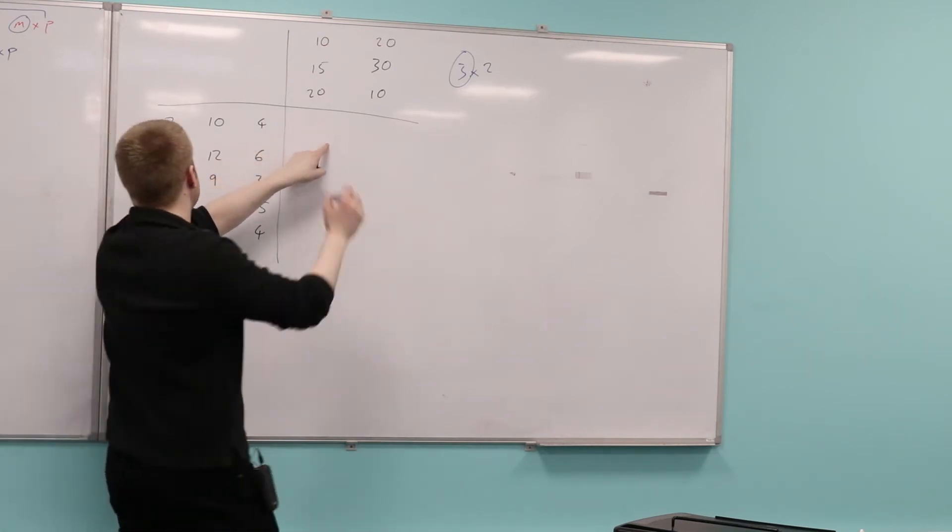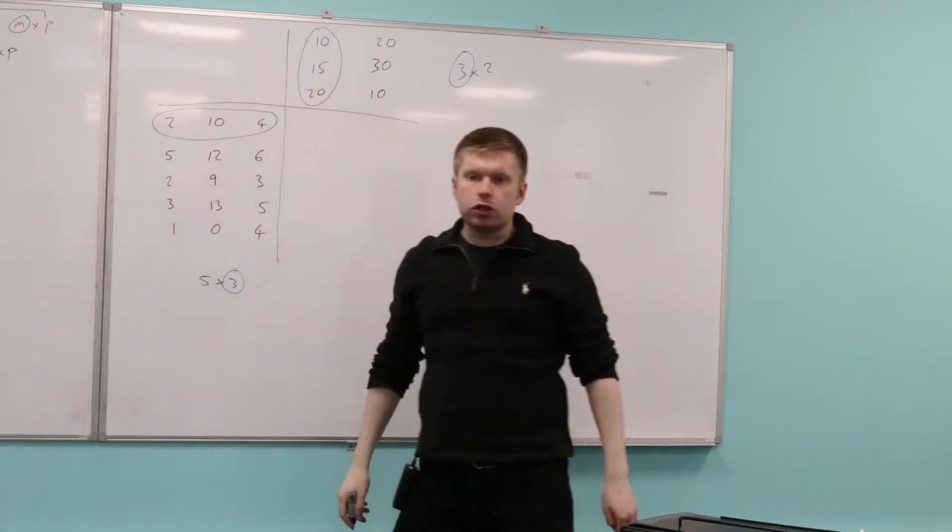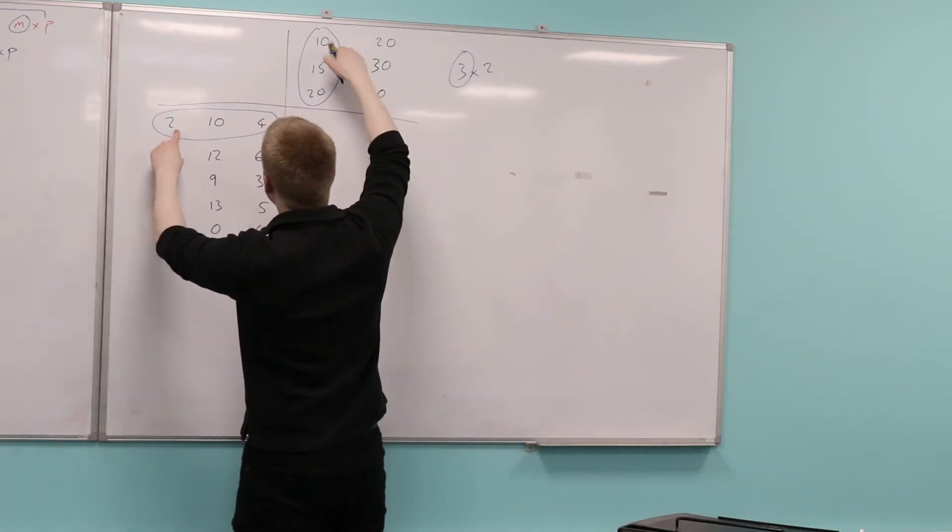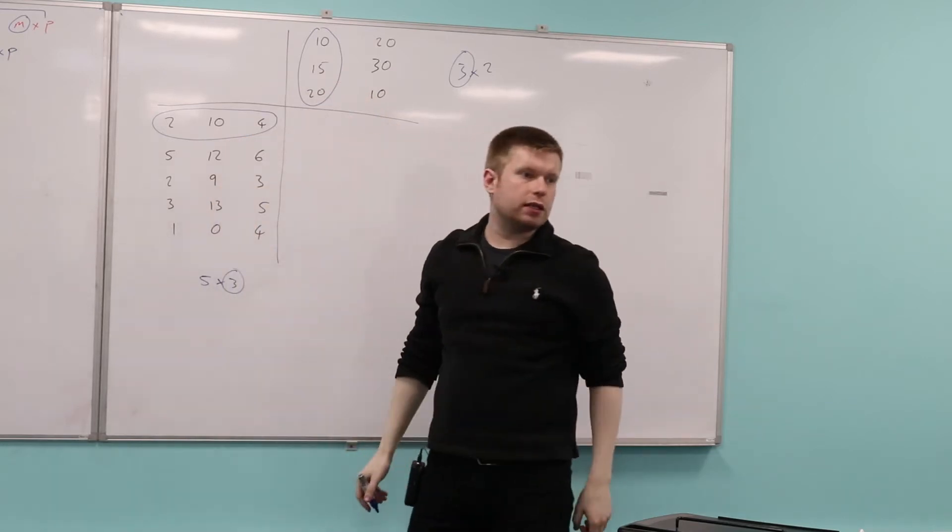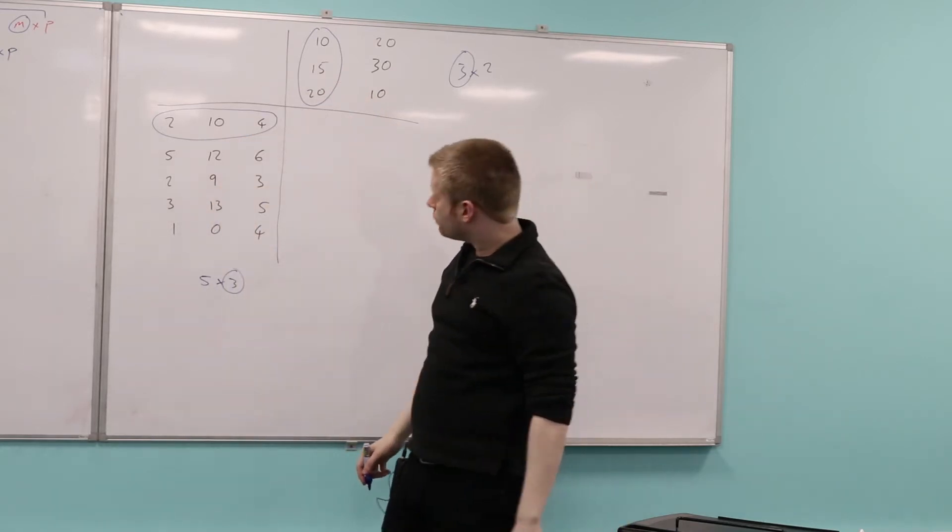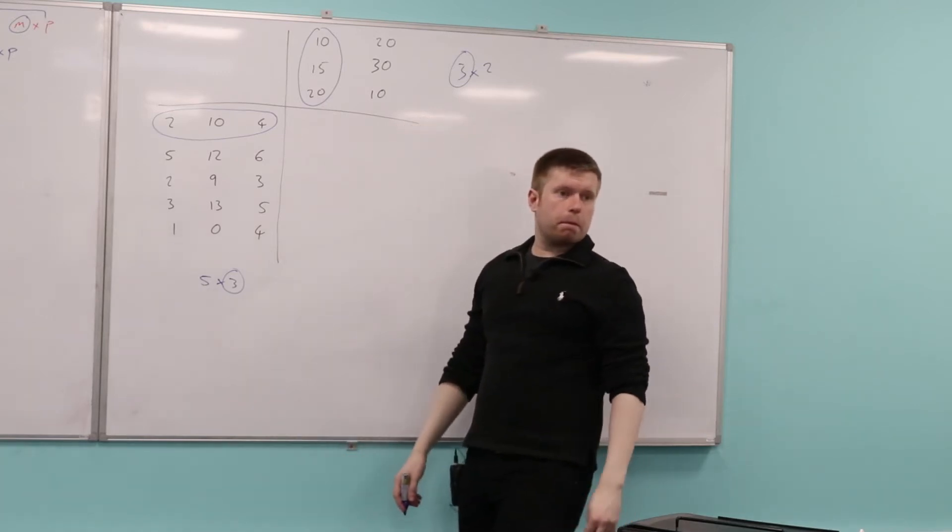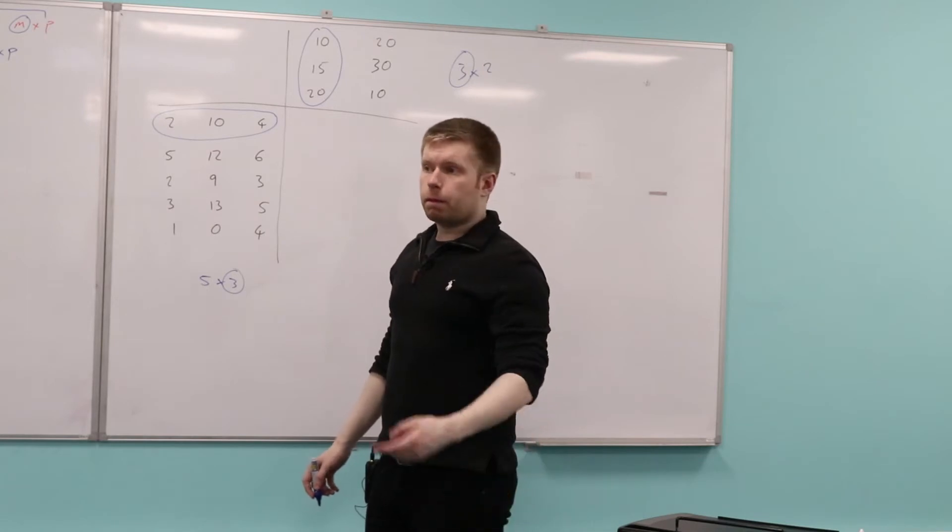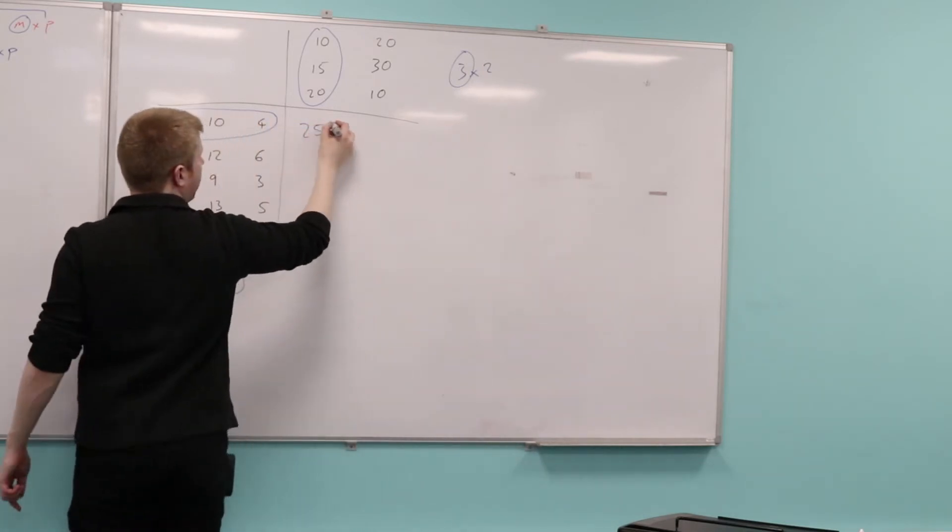So to find the element that goes here, I just simply look at this row and this column, and I multiply the corresponding elements together. So have a look: 2 times 10 plus 10 times 15 plus 4 times 20. That's 20, 150, 170... 4 times 20 is 80, 170 plus 80, so it's 250. Absolutely right, 250.